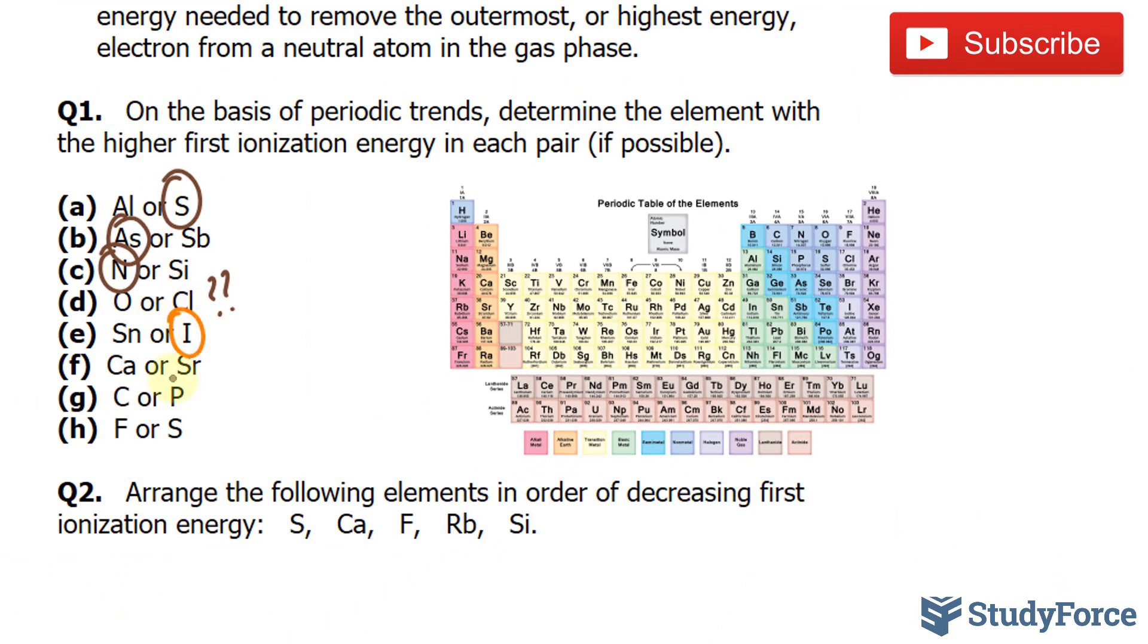So the answer is I. Now we compare calcium to strontium. Calcium is higher up the column than strontium. Therefore, calcium has a higher ionization energy.